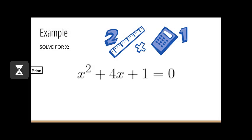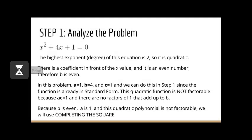For our example, let's solve x squared plus 4x plus 1 equals zero for x. The highest exponent is 2, so it's quadratic. There's a coefficient in front of the x value and it is an even number, so b is even. Because it's already in standard form, we can tell that a equals 1, b equals 4, and c equals 1. If we multiply a and c together we get 1, so we'd need factors of 1 that add up to 4. The only factors of 1 are 1 and 1, and 1 plus 1 is 2, so this equation is not factorable. Because b is even, a is 1, and the polynomial is not factorable, we will use completing the square.